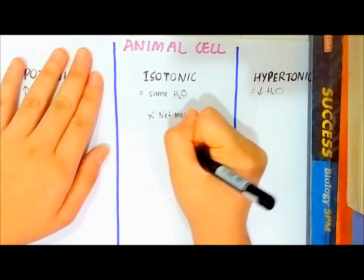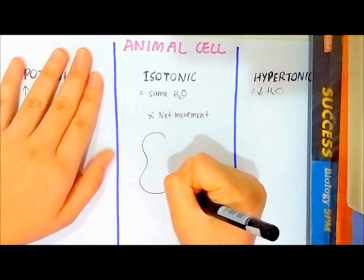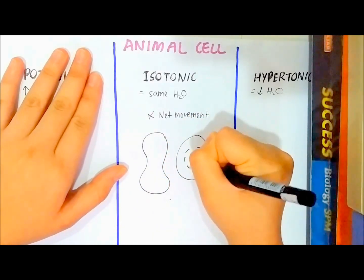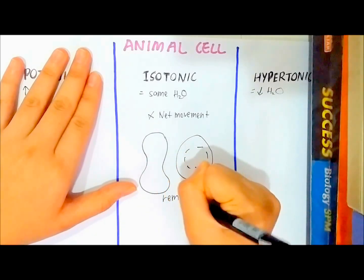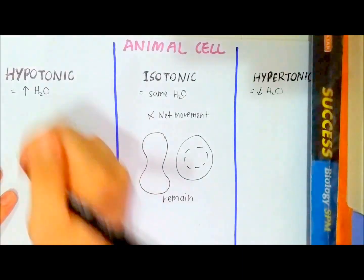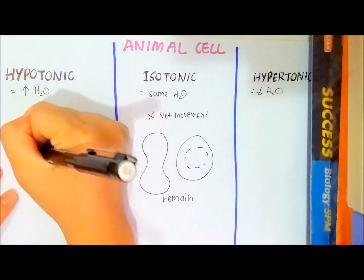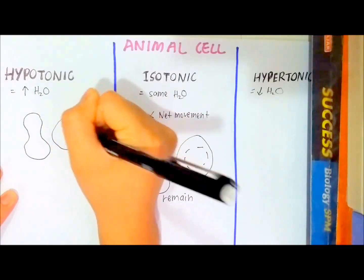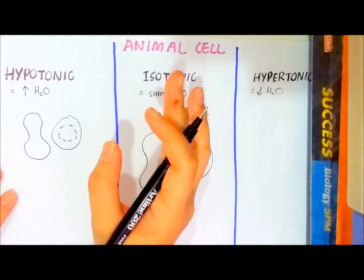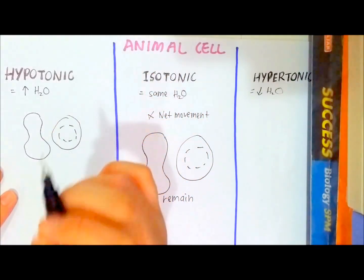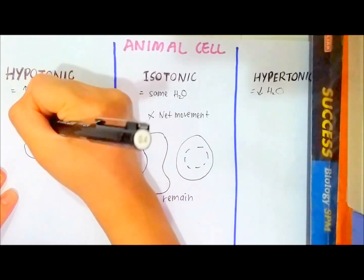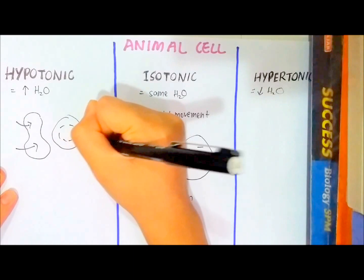Therefore, the red blood cell will remain in its biconcave shape. But for hypotonic solution, if the red blood cell is immersed in hypotonic solution, since it has more concentration of water molecules, the net movement of water molecules from the hypotonic solution will enter into the cytoplasm of the red blood cell.